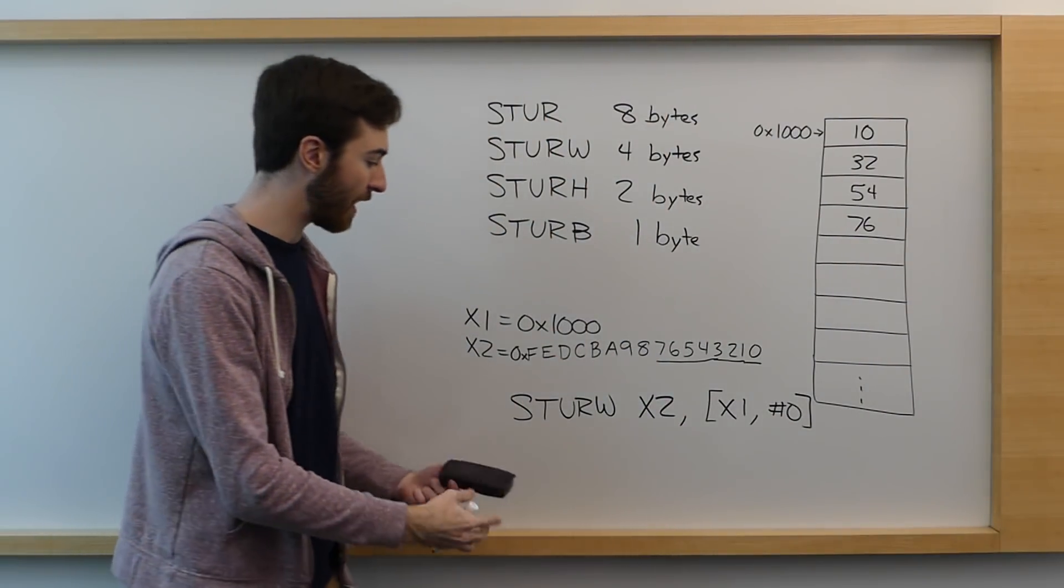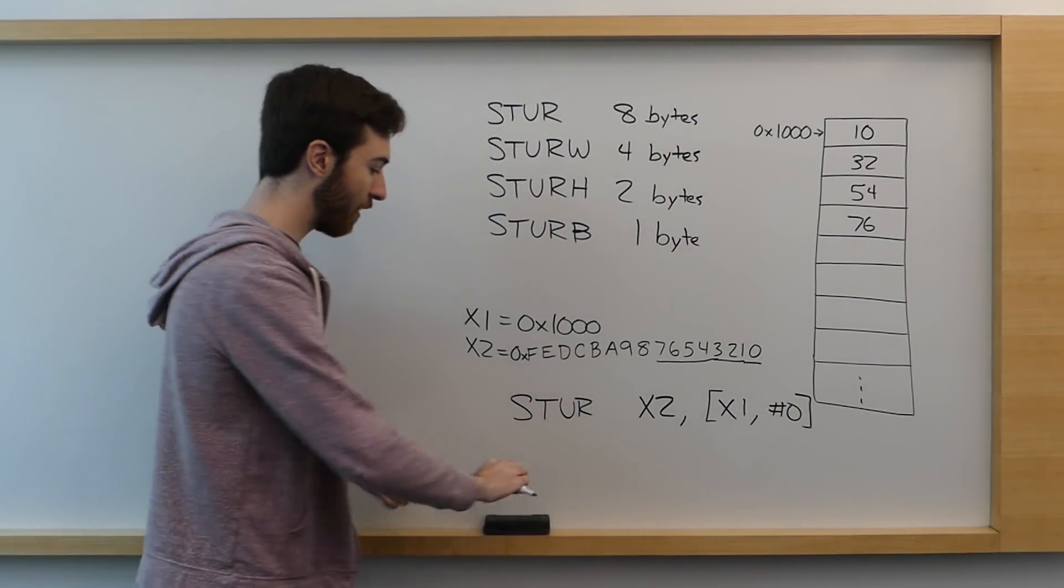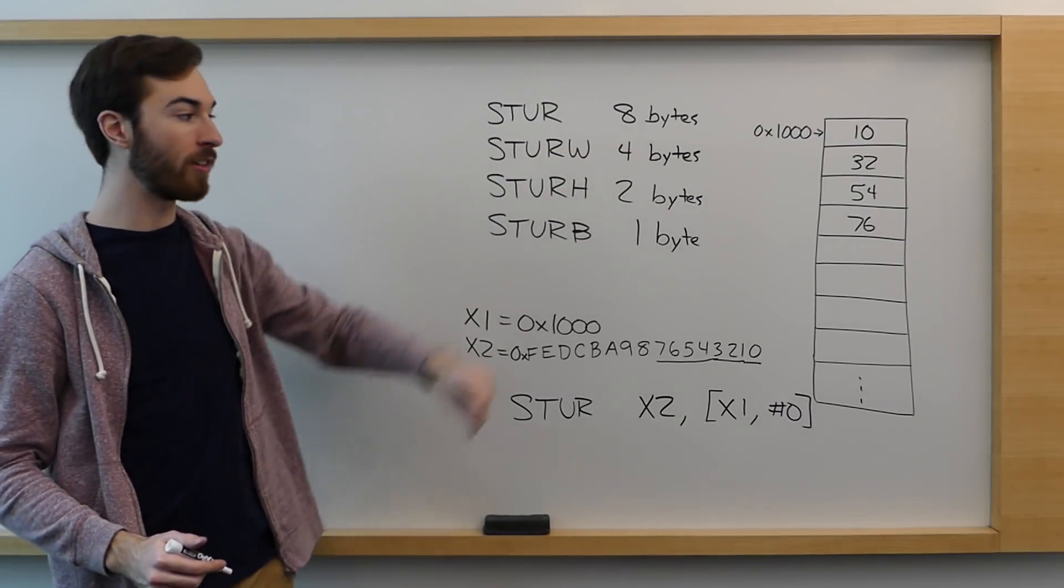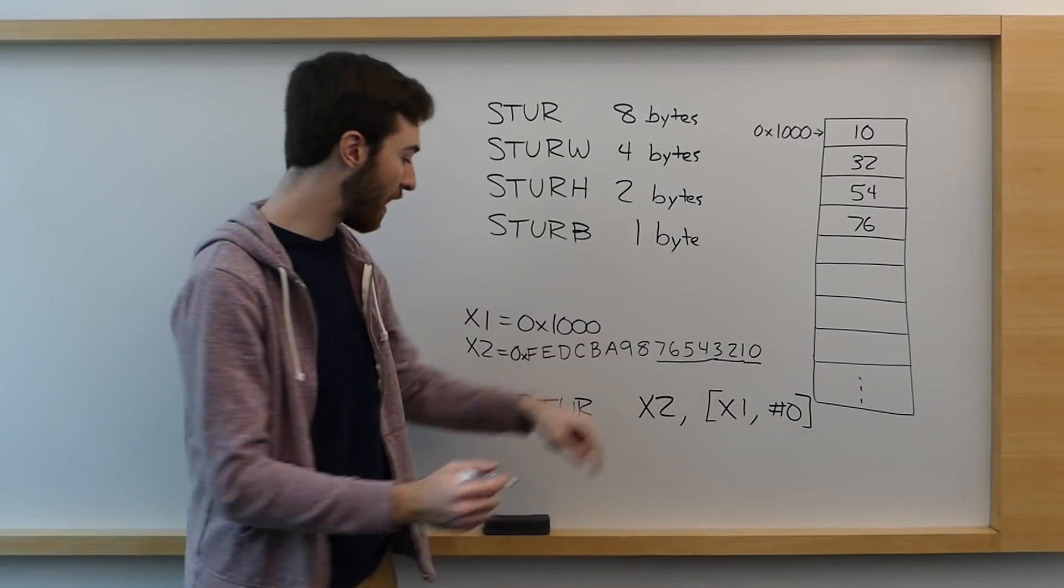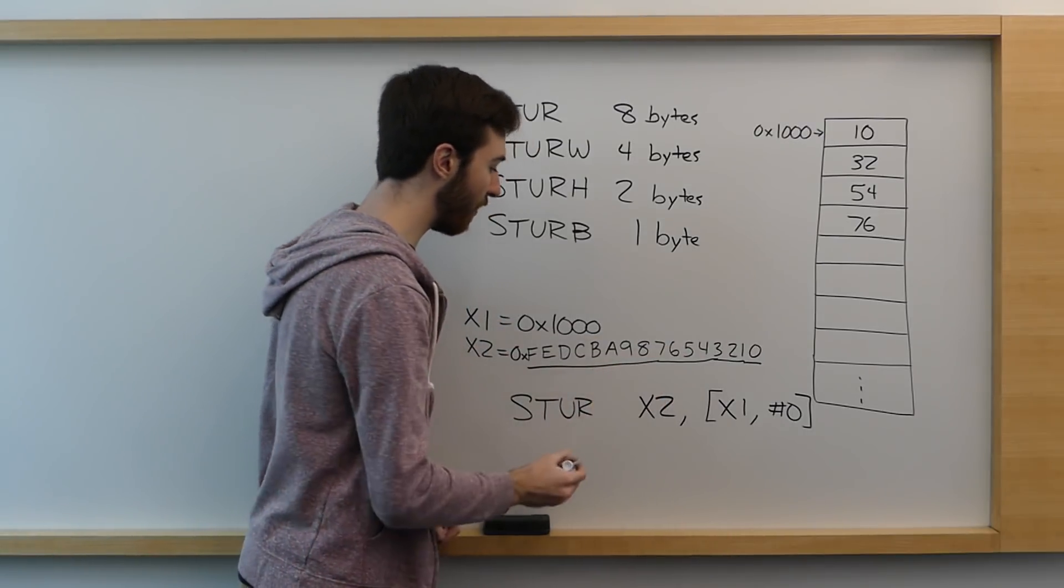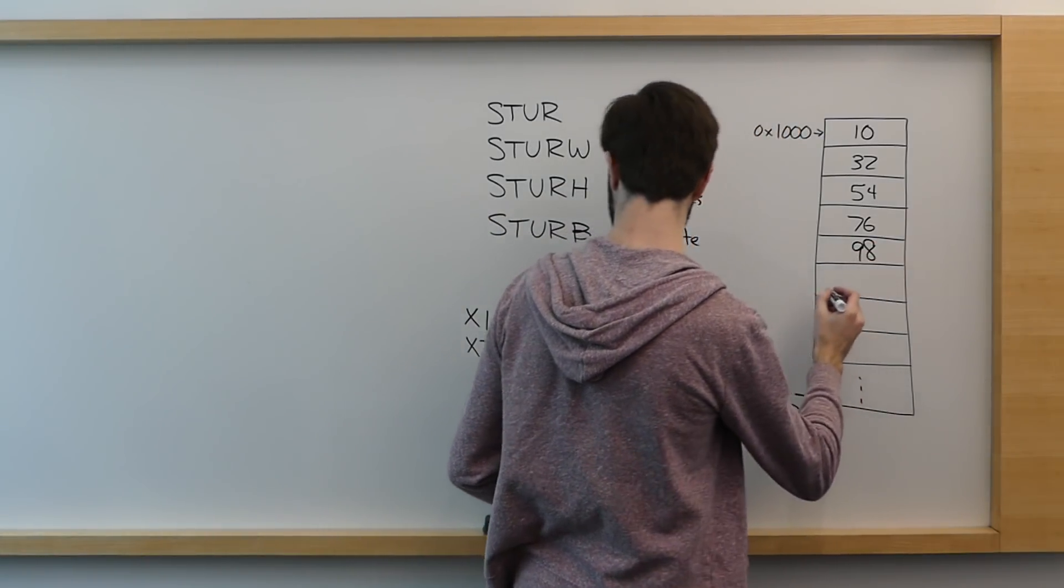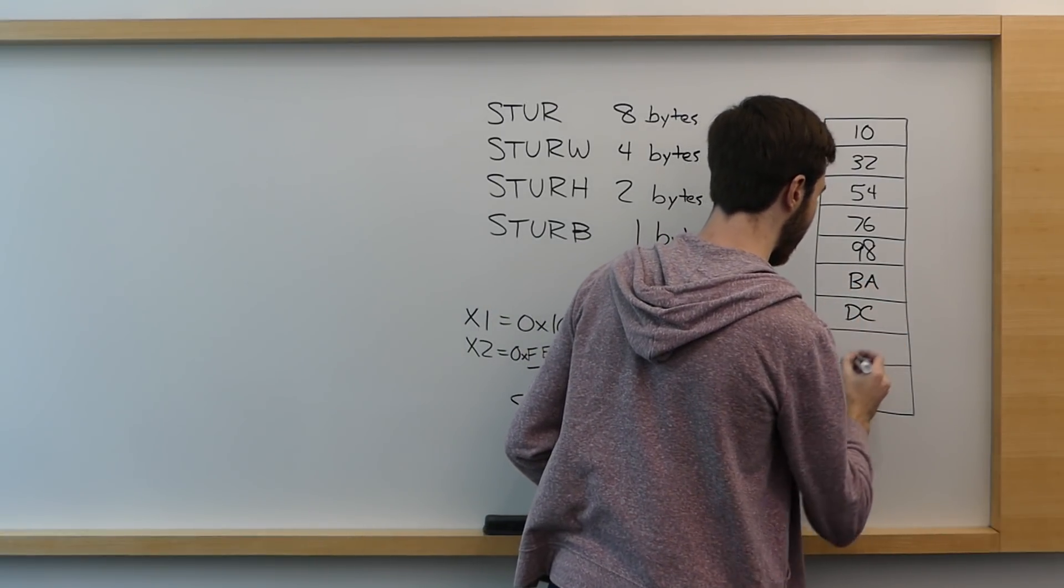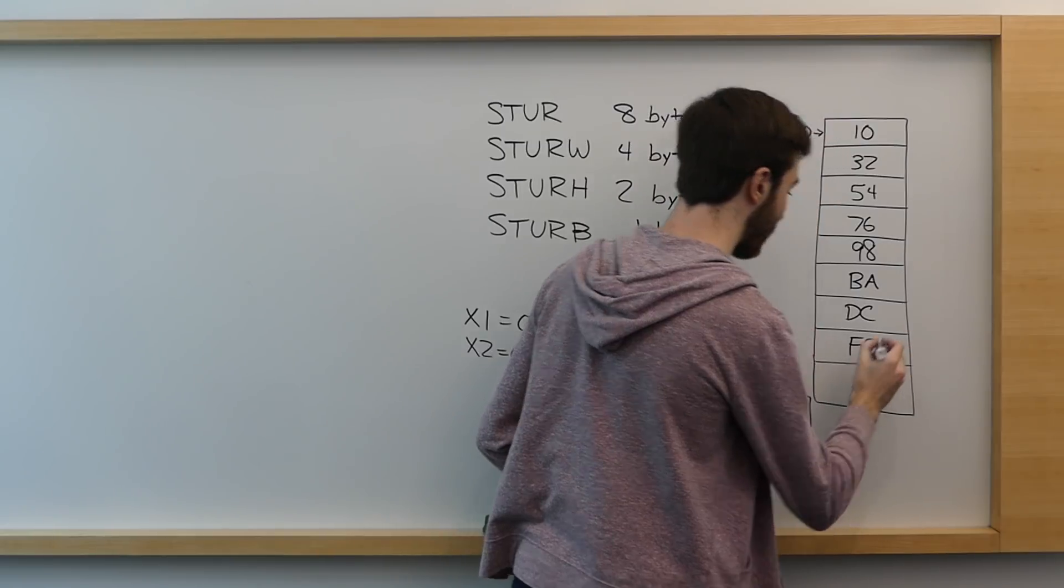Now suppose that we had a STURW command, so we're storing four bytes. It would now take an additional two of our bytes, and it would now store 5476 as well. And then finally, if we just had the normal command or instruction that takes an entire 8-byte register and stores it to memory, it would take the entire number and lay it out in memory sequentially, so we would then have 98BADCFE in there as well.